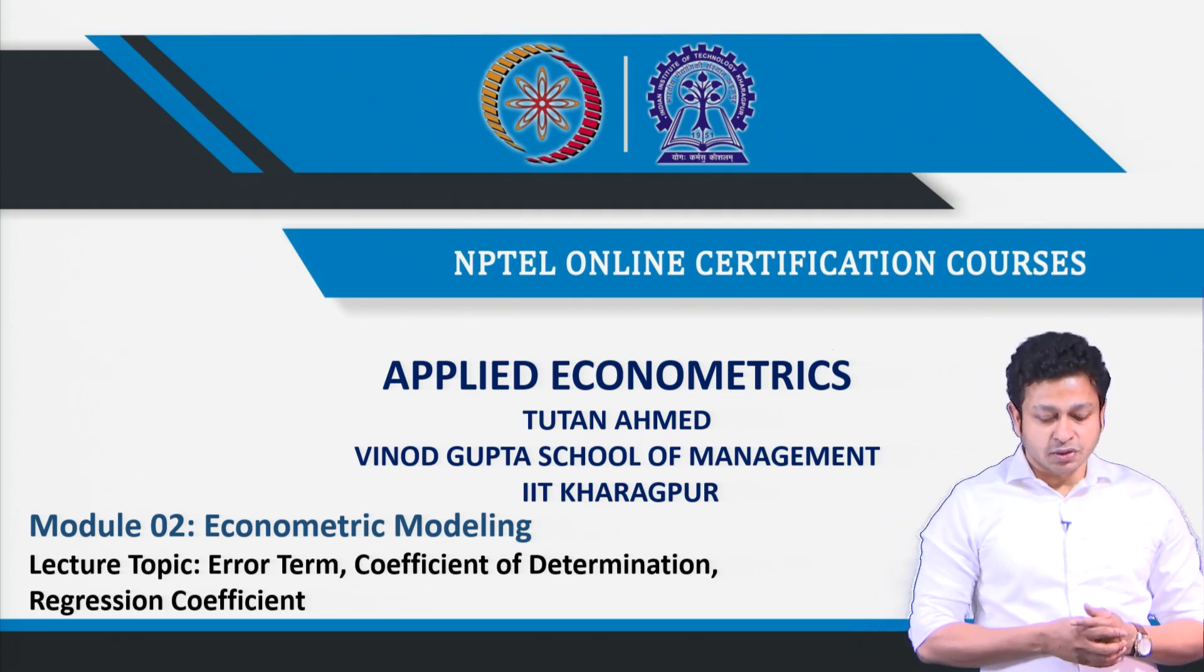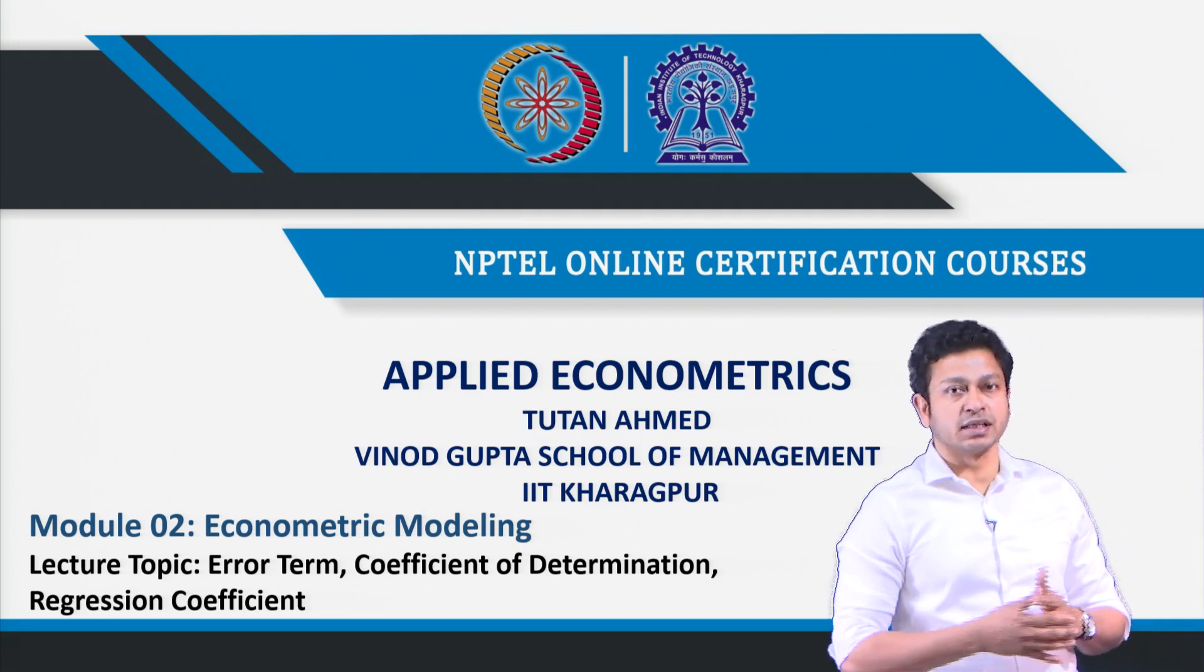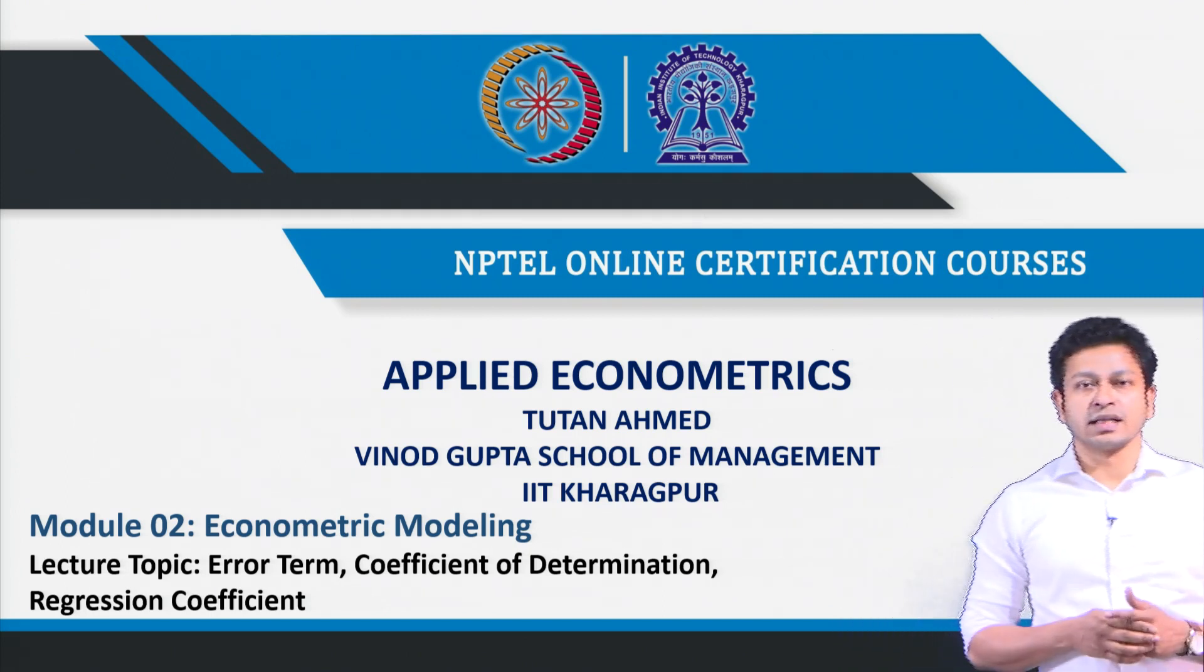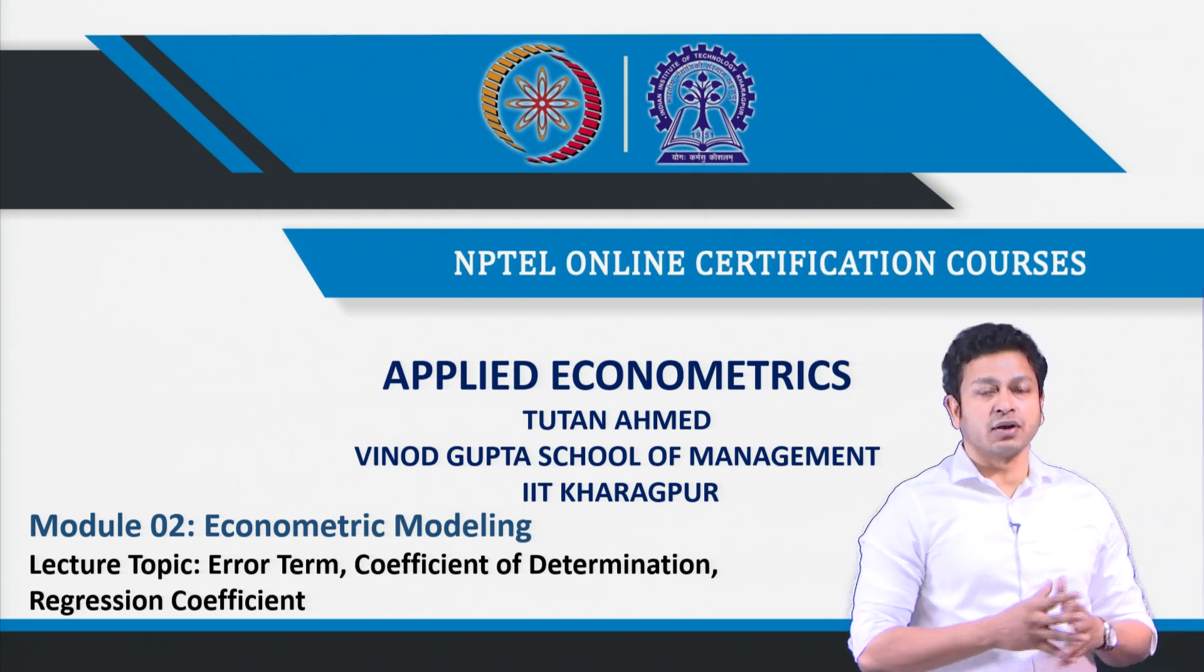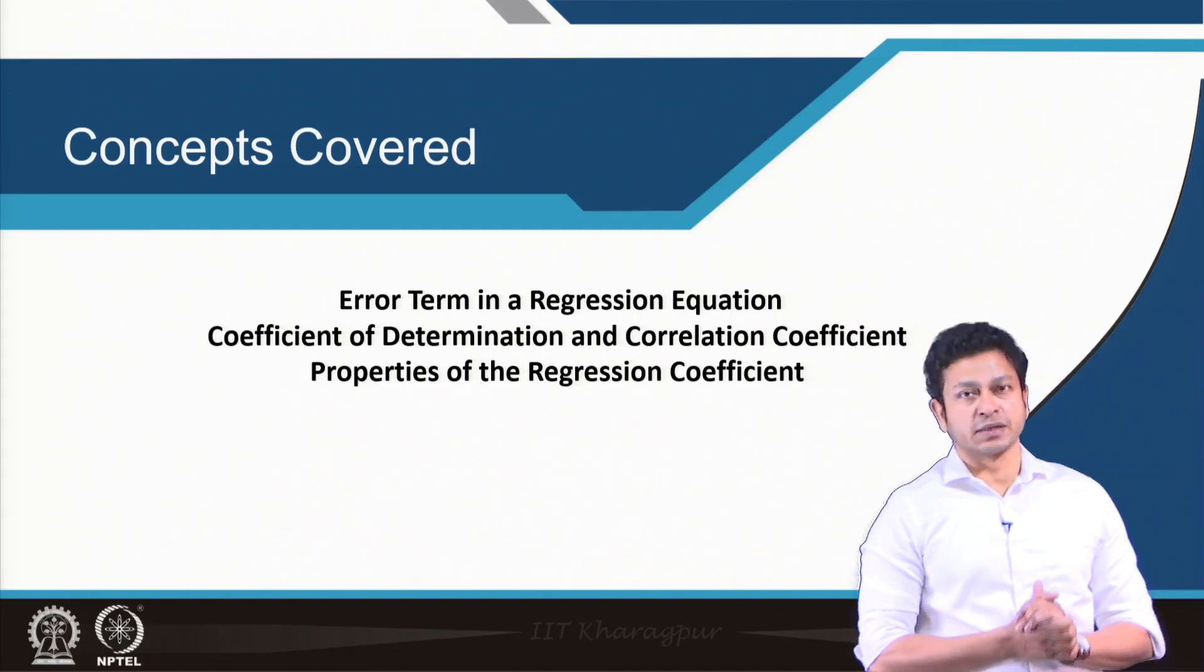The dealing part will come later, but mostly we will talk about where it is coming from. The second topic is coefficient of determination. We are going to see how coefficient of determination is actually related with correlation coefficient. We will try to prove the relationship mathematically and then talk about the properties of regression coefficient.